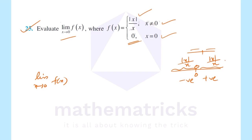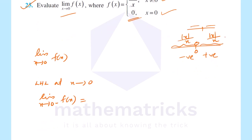First, let's compute the left-hand limit. The left-hand limit at x tends to 0 is: limit as x tends to 0 minus of f of x. For the left-hand limit, we substitute x equals 0 minus h, so 0 minus h equals negative h.